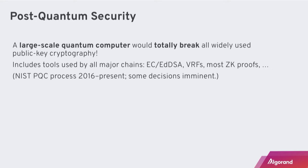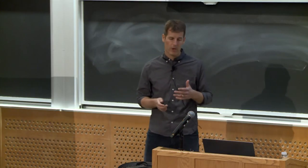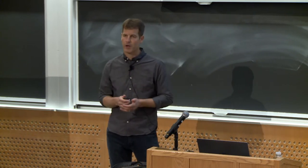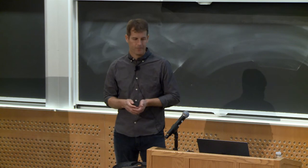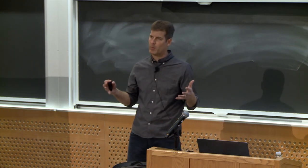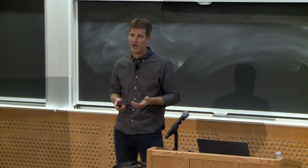In recognition of this problem, NIST and other agencies have started a process to standardize post-quantum cryptography — cryptography we can use today that will be secure against future quantum computers. Some decisions are imminent on that. People like me have been working on these problems for decades now. So concretely, what does this mean for blockchains?